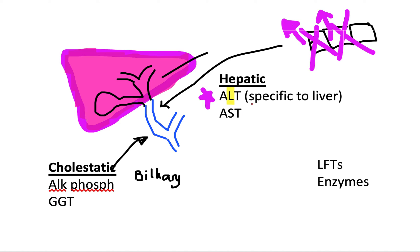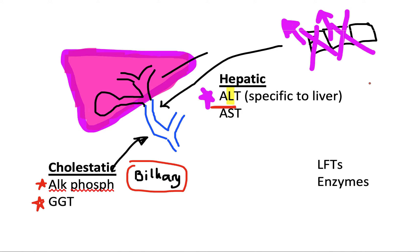So that's ALT and AST — aspartate aminotransferase. Then we have alkaline phosphatase and GGT. These two are more specific for cholestatic reasons, or for the biliary tree. So if your patient presents with a raised ALT, that gives you a clue that there is some kind of problem specific to the liver.